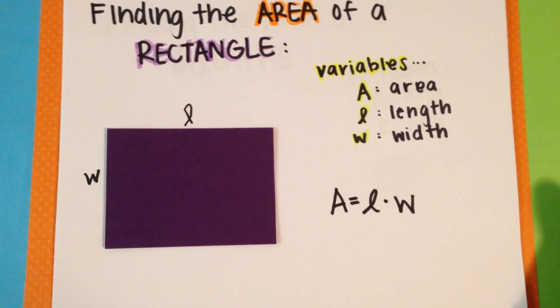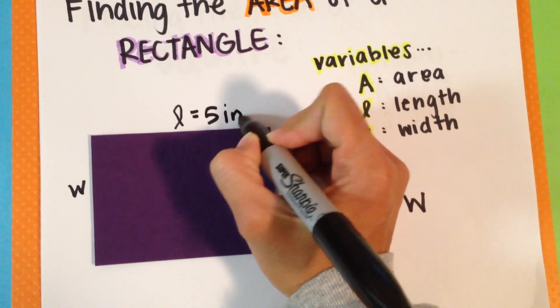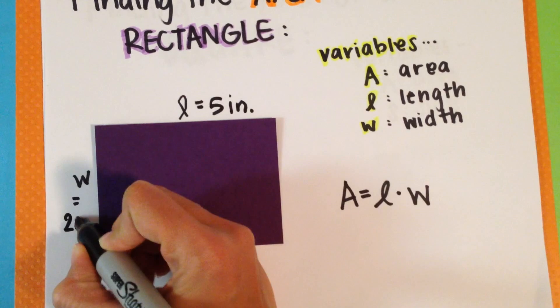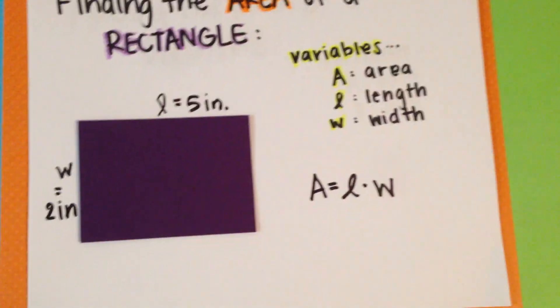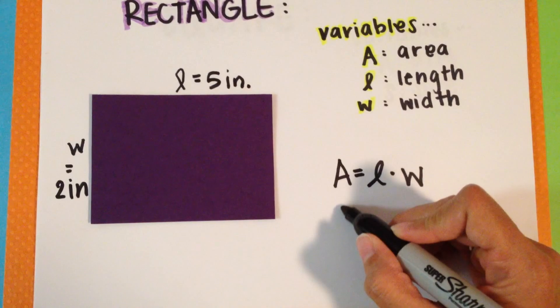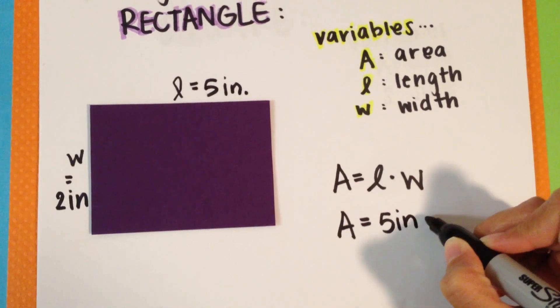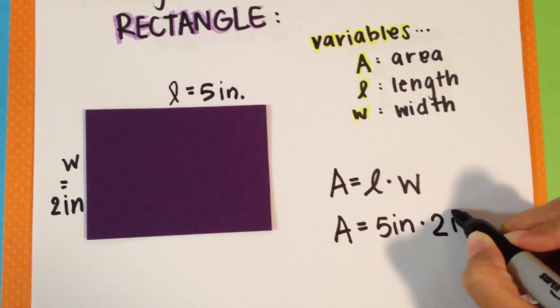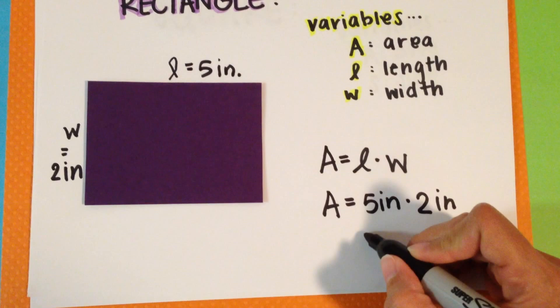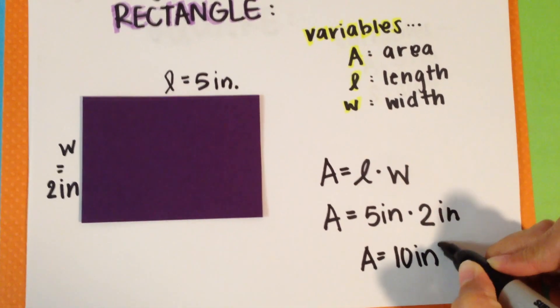Say we had a length of 5 inches and a width of 2 inches. What is our area? Our area will be 5 inches times 2 inches, giving us a total area of A equals 10 inches squared.